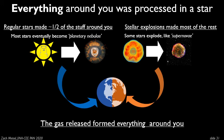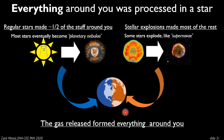Everything around you was processed in a star. Regular stars made about half of the stuff — they finished their burning and expelled a cloud of gas out into the universe. Around the other half of the material was released in a stellar explosion or merging neutron stars. These gas clouds coalesced, and one gas cloud in particular formed our solar system — and ultimately some of that gas coalesced to form the Earth and even you. Everything you can look at in the room around you was processed in a star or stellar explosion at one point. It's kind of remarkable.